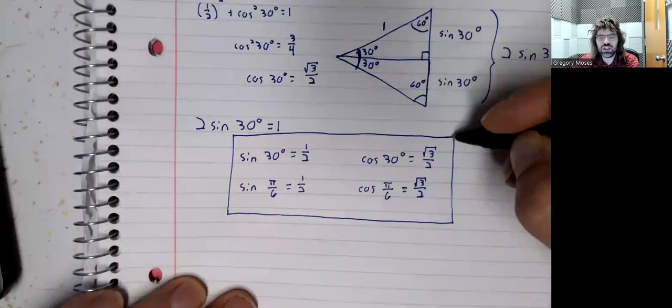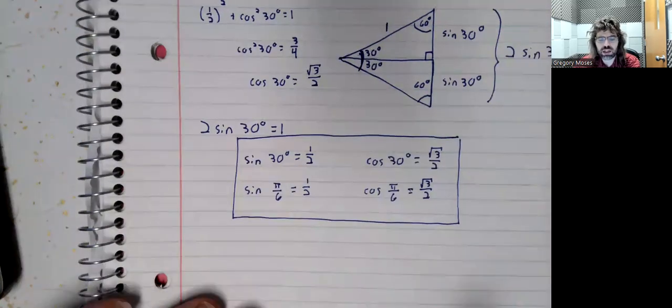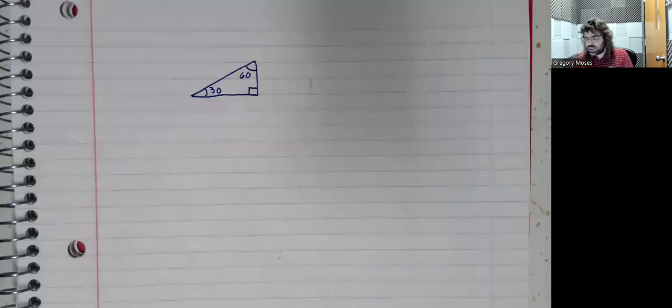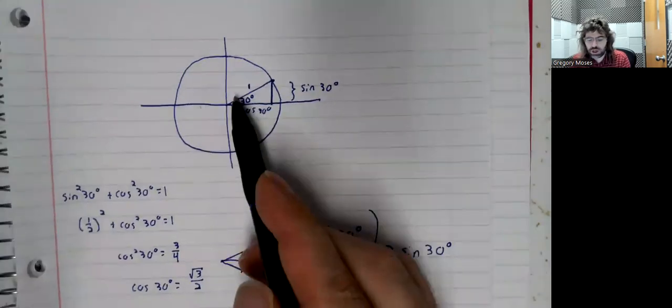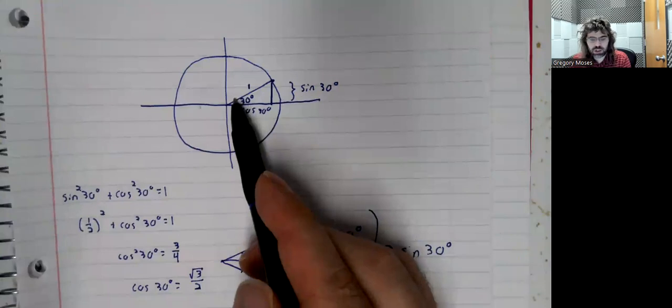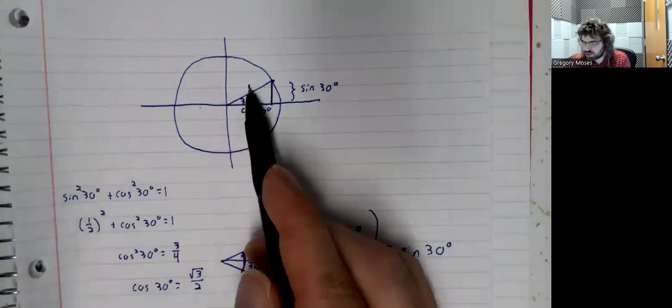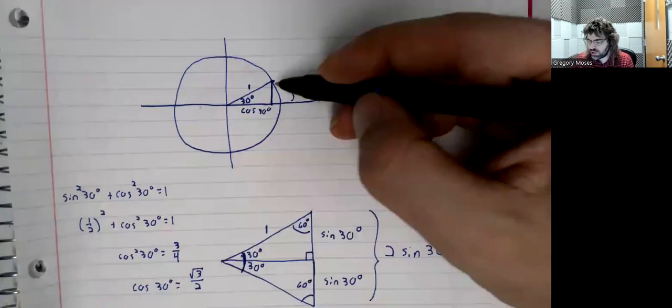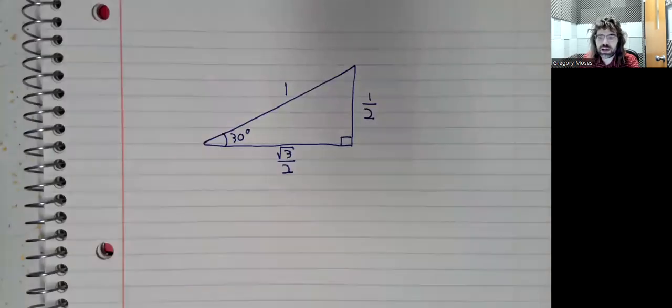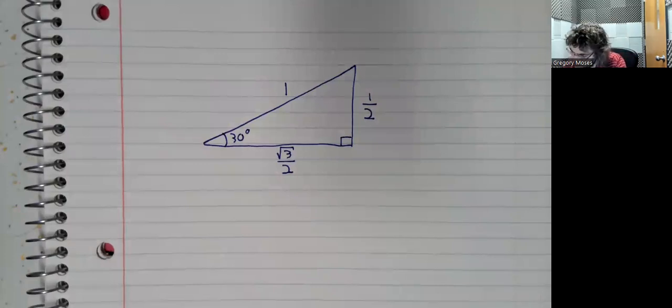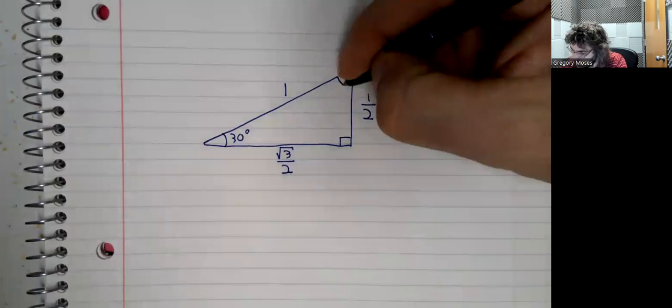Let's do 60 degrees quite quickly. In particular, let's return to this triangle up here. So we know the hypotenuse is 1. We know that this is the sine of 30 and this is the cosine of 30. We know that because the angles add up to 180, this is 60 degrees.